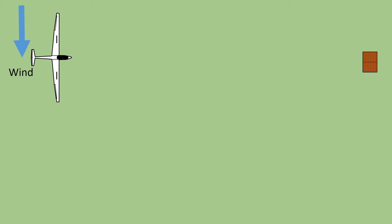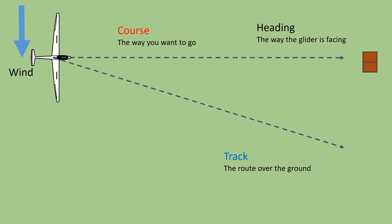Time for some terminology. Your course is the way you want to go, and your heading is the direction that the glider is facing. Finally, the track is the route the glider takes over the ground.